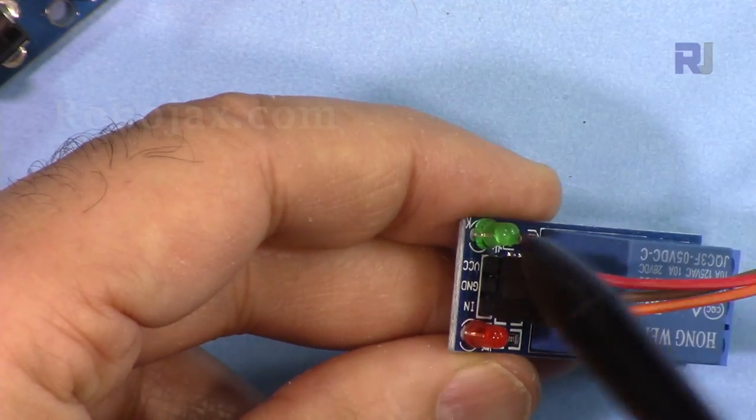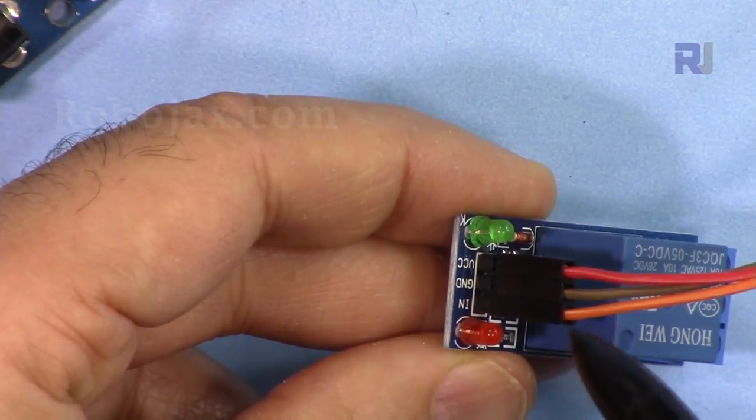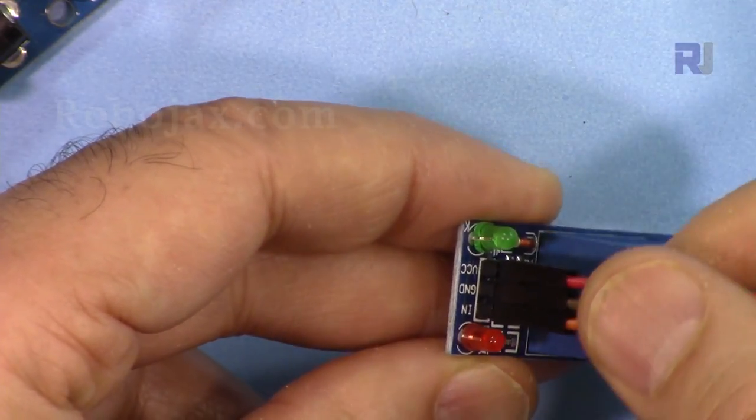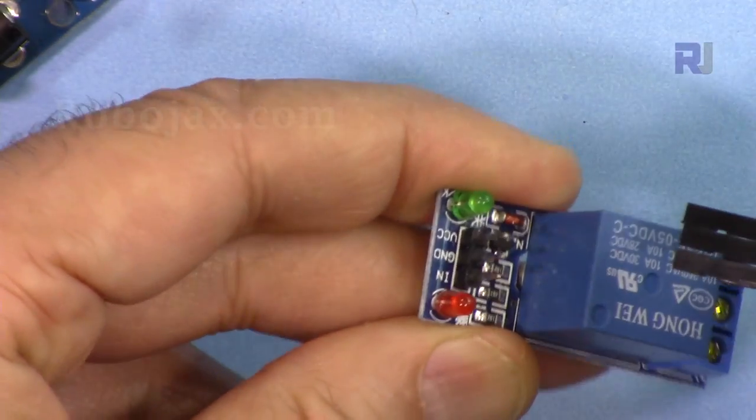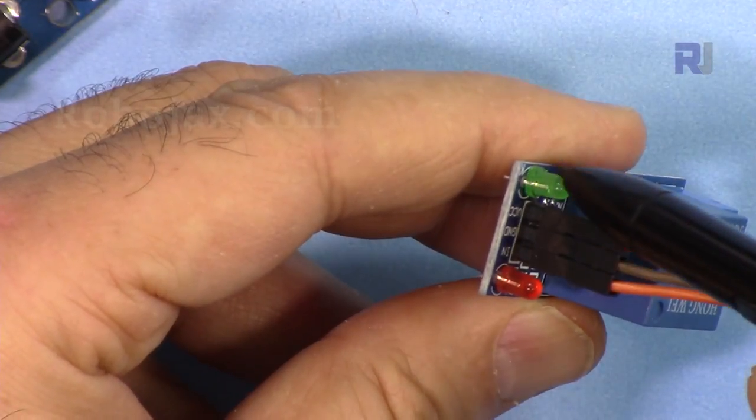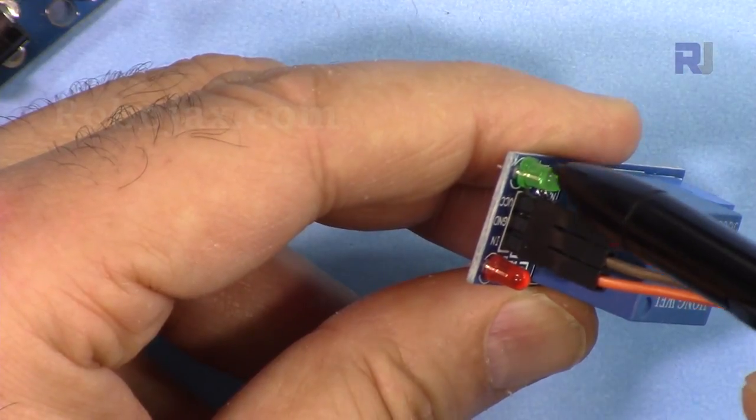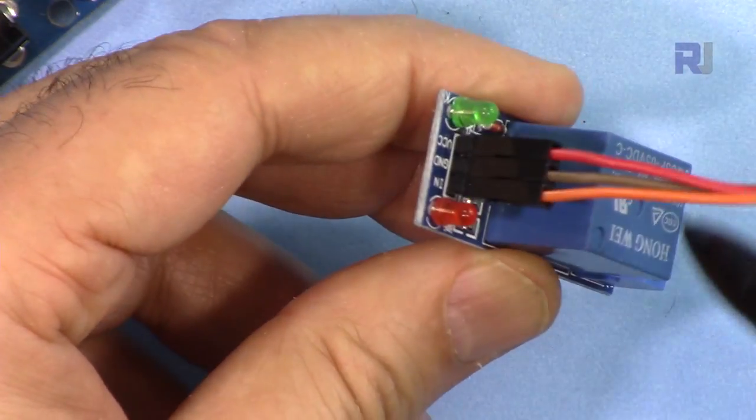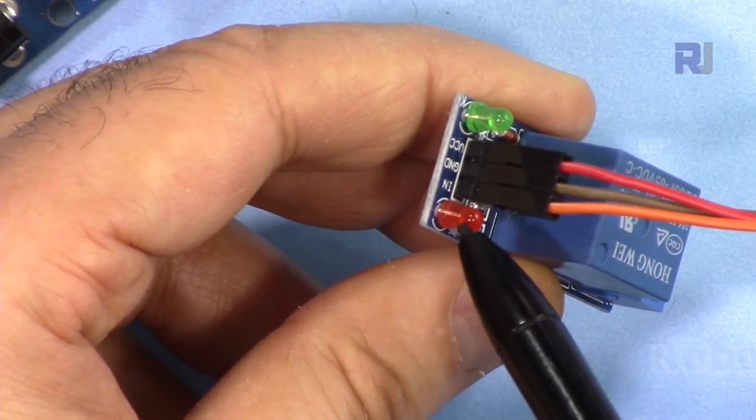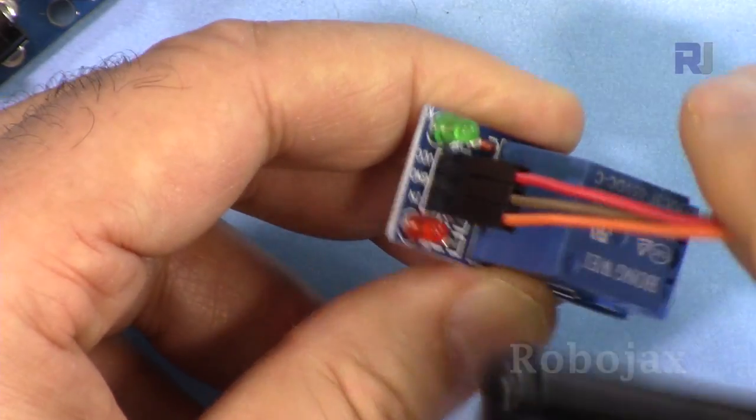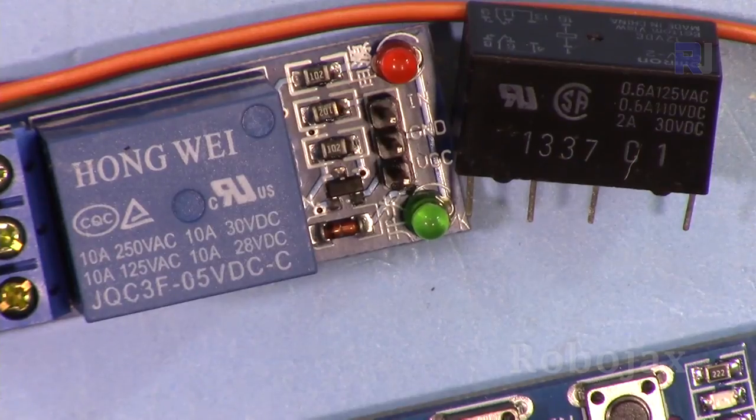This side we have VCC which will be connected to 5 volts, ground will be connected to the ground, and IN will be connected to the input of your Arduino, which is pin 8. This green light will turn on when it receives signal and the relay is energized. LED will turn on when you connect the relay to 5 volts.